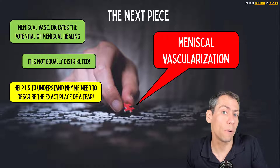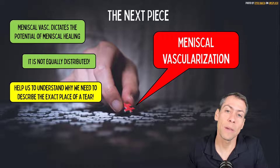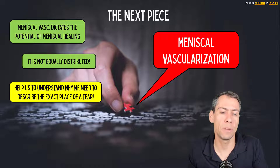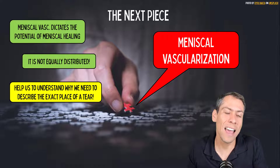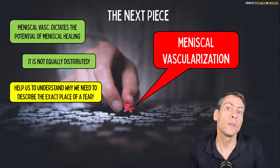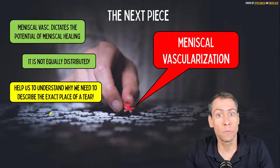For example, a tear in the periphery of the meniscus has a better chance of healing than a tear in the central portion of the meniscus. And it has everything to do with the meniscal vascularization. So we're going to talk more about the meniscal vascularization right now.